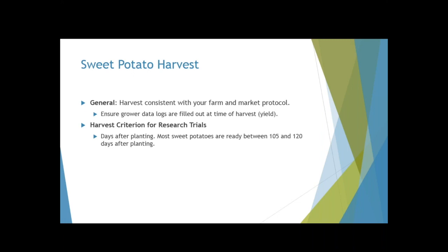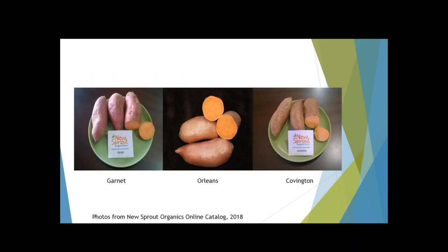For those growing sweet potatoes, the harvest criteria for research trials are similar to what you'd probably be doing on your farms already. Sweet potatoes can have variety-specific information as well as info dependent on your location and weather this year, but mostly they are harvested based on days after planting — usually between 105 and 120 days. Varieties sourced this year from New Sprout include Garnet, Orleans, and Covington.